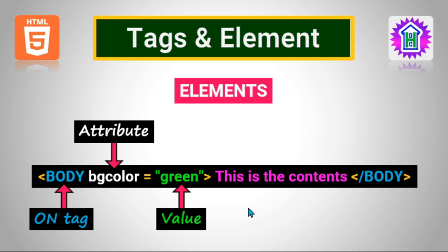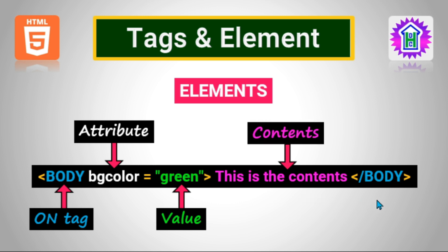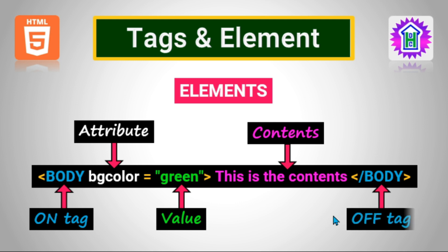After the value of the attribute we have the contents, followed by the closing tag. So from the starting tag to the closing tag, everything you have written is called an element. Tags are nothing but commands, and an element depicts how we are using that particular tag. The ending tag is also called the off tag.